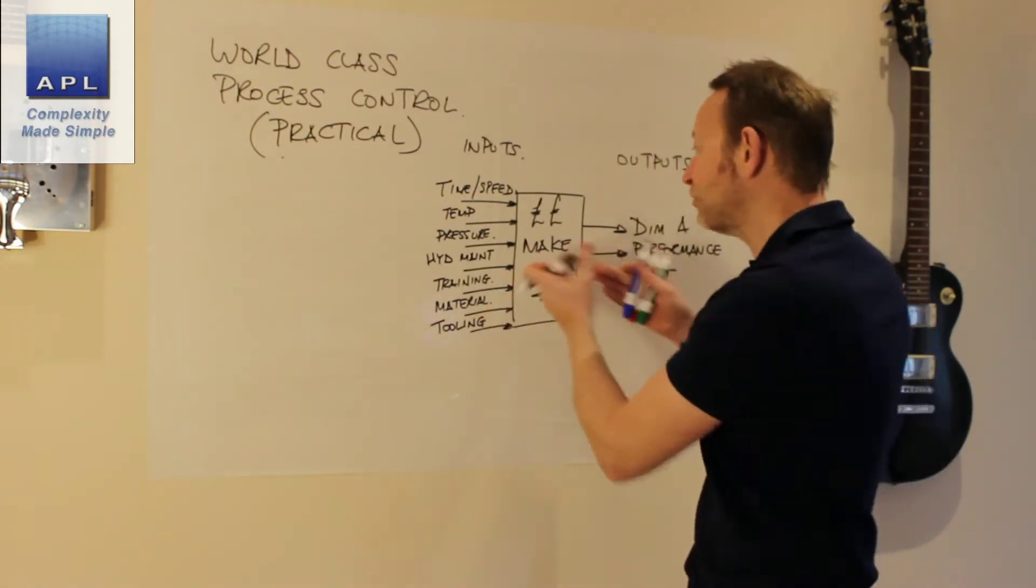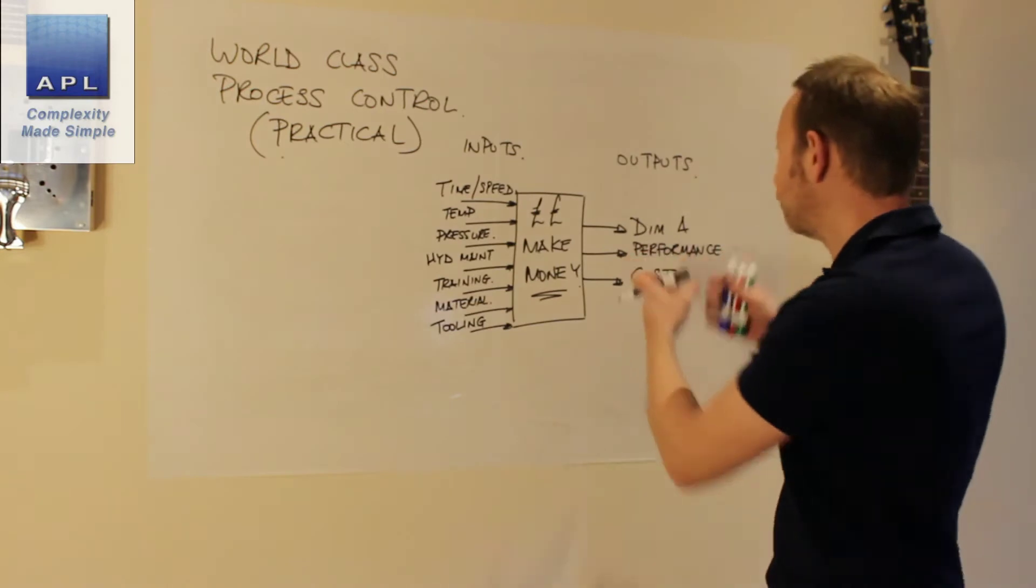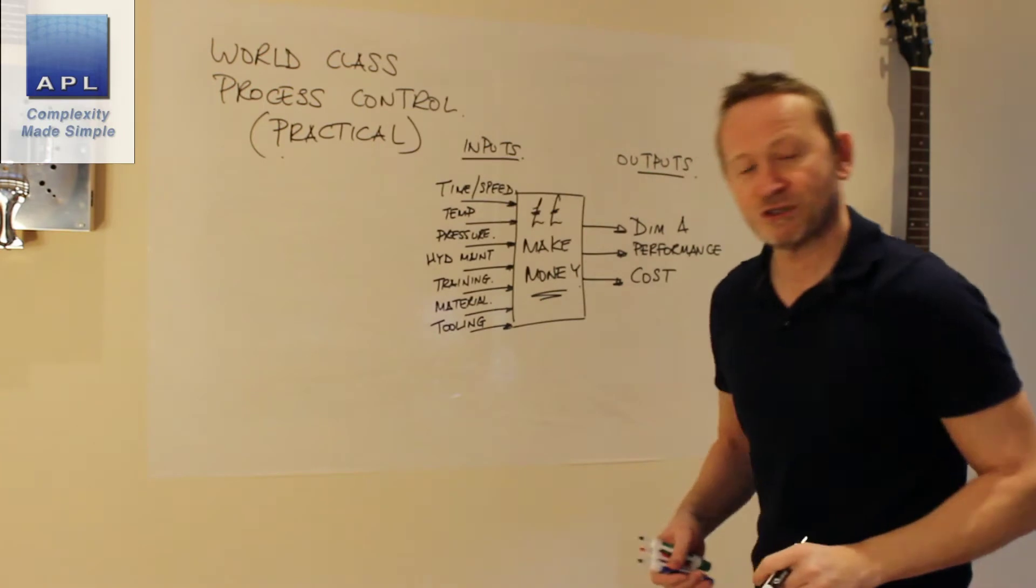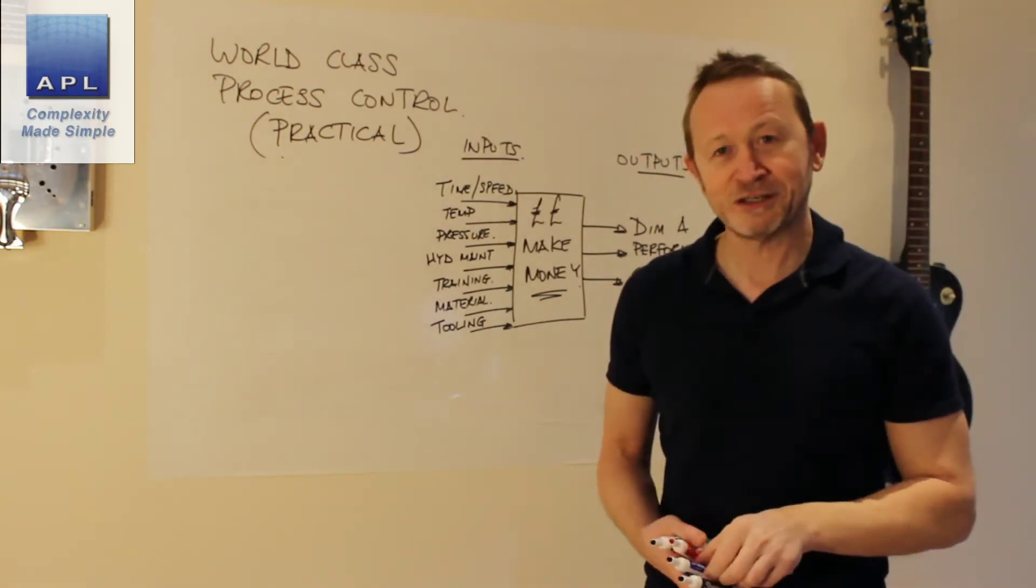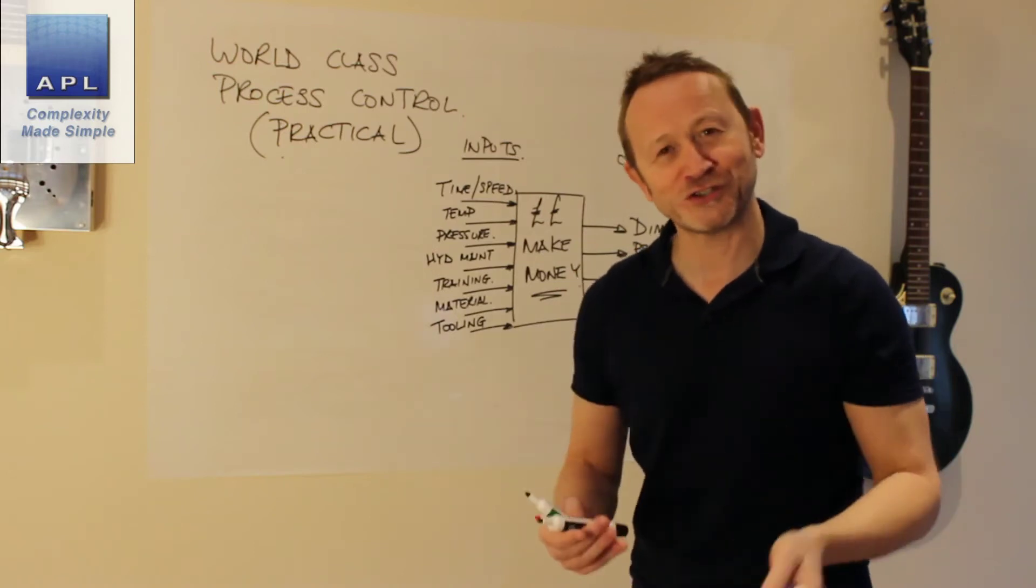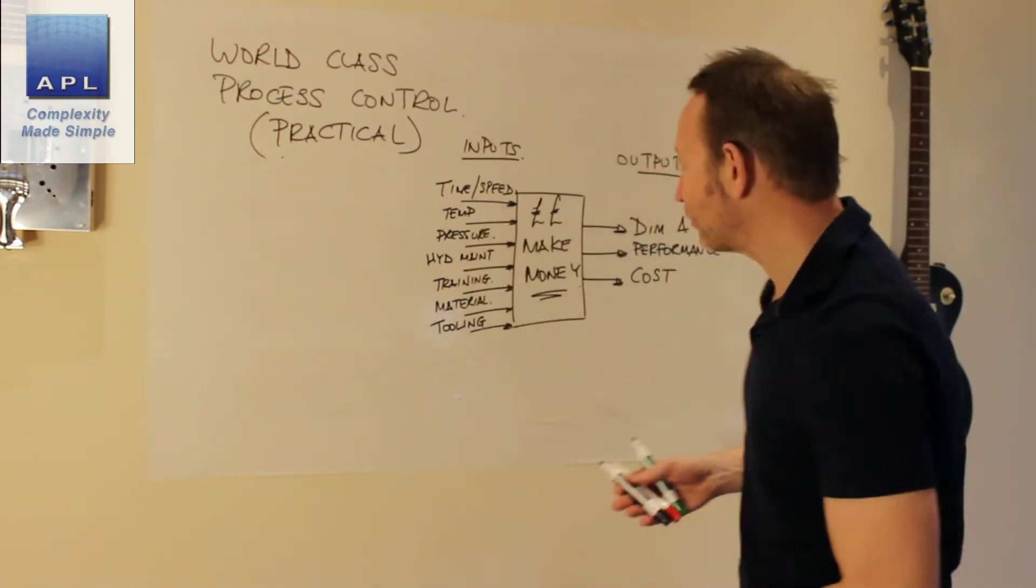So some of these are policies and procedures. Some of these are physical settings. They are all inputs to our money-making machine, which is trying to do something for our customer on the output side. Now, practical, world-class process control. This is dead simple now, folks.